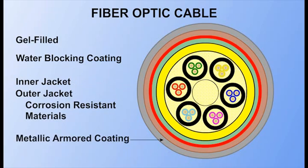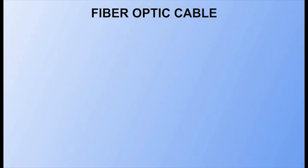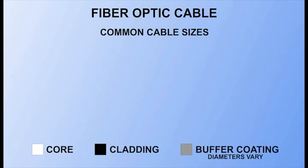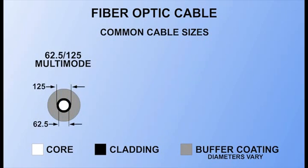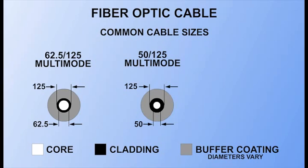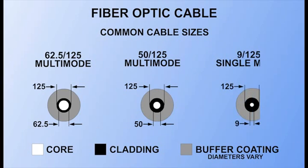Some cables also have a metallic armored coating for strength and to protect against rodents. Fiber specifications list the core and cladding diameters as a ratio. Multi-mode fiber is usually either 62.5 by 125 microns or 50 by 125 microns. Single-mode fiber is commonly 9 by 125 microns.